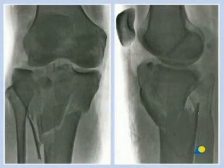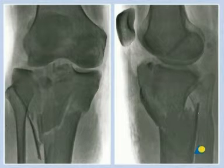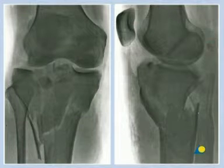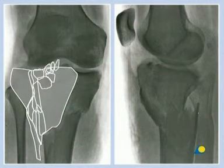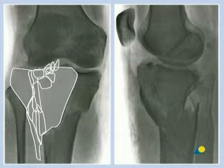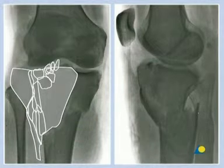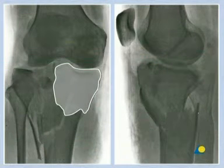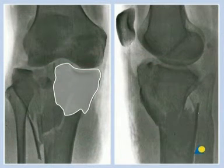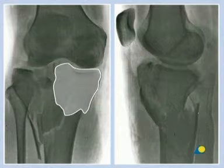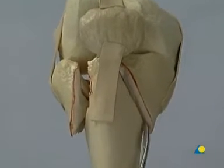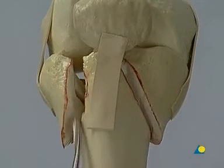Bicondylar type C fractures of the tibial plateau are multifragmentary articular fractures characterized by the involvement of both the medial and lateral plateaus. On the lateral side there is usually considerable comminution and impaction of the articular surface. On the medial side, there is usually a large bone block that has been avulsed or sheared off in one piece. The model shows a large bone block medially and considerable comminution laterally.